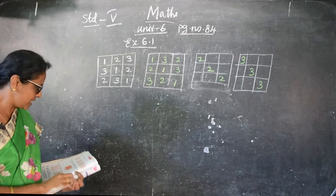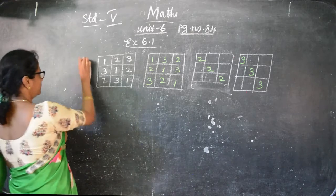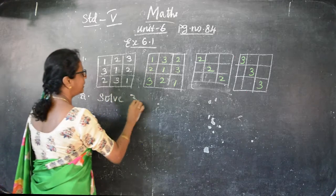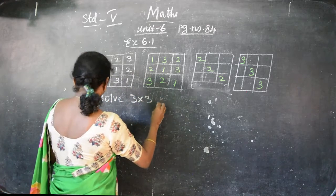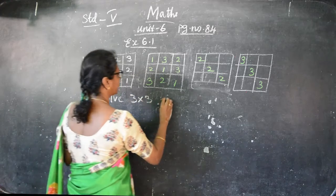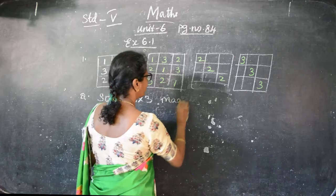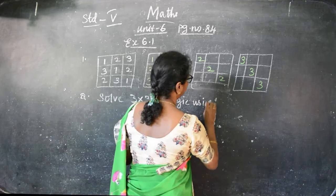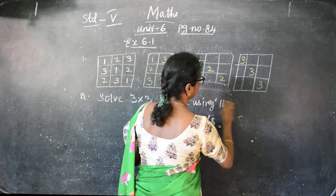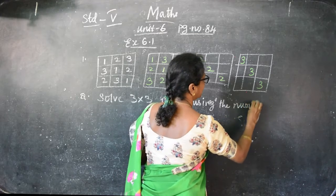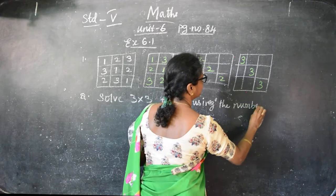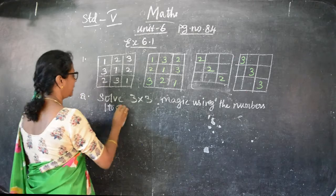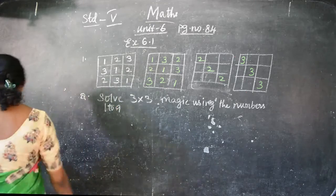And then the second one is a 3 into 3 magic square - solve the 3 into 3 magic square using the numbers 1 to 9.